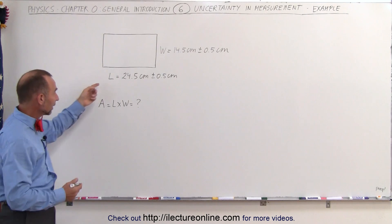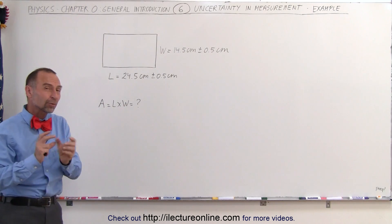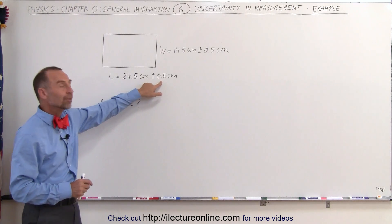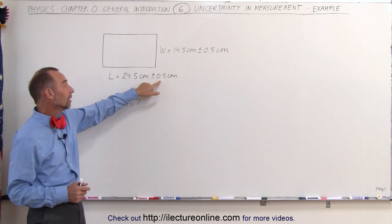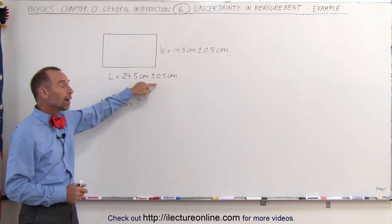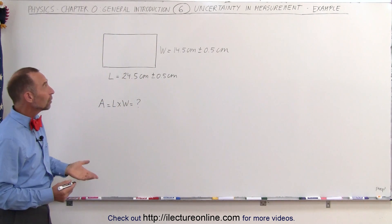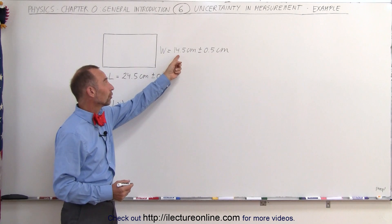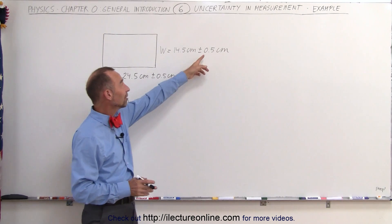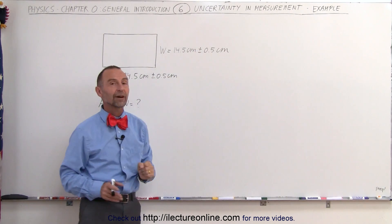We made the measurement of the length, and it came out to be 24.5 centimeters, but because there was some uncertainty, we figured there's about half a centimeter of uncertainty, so therefore it's 24.5 centimeters plus or minus 0.5 centimeters. Same with the width — we measured it to be 14.5 centimeters, but the uncertainty was about half a centimeter, so we wrote plus or minus 0.5 centimeters.